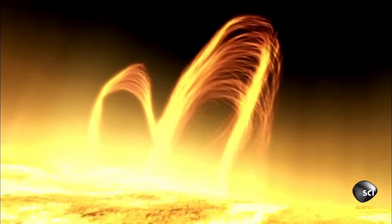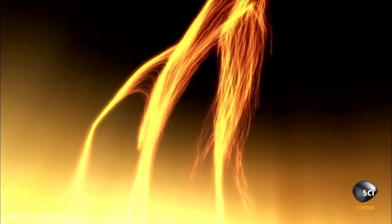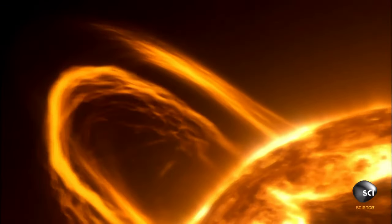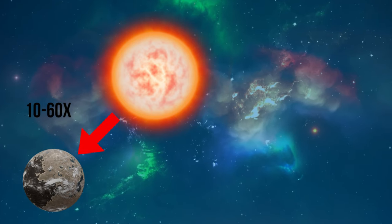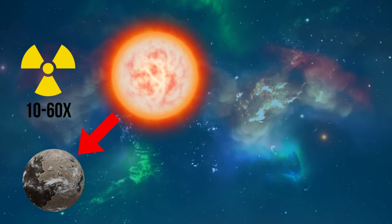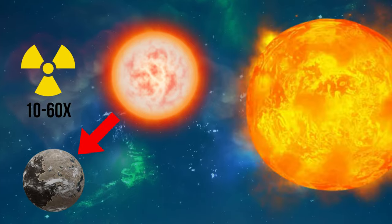But due to orbiting a flare star, brings in the question of the stability of the possible atmosphere, as the planet receives around 10 to 60 times the amount of radiation from its star as Earth does from the sun.